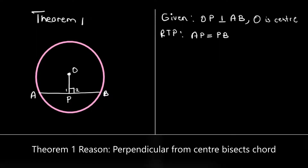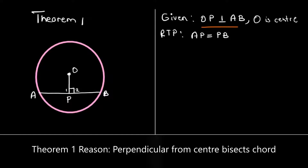Okay, so now this is Theorem 1. We are given that OP is perpendicular to AB, and O is the center. We are required to prove that AP is equal to PB.